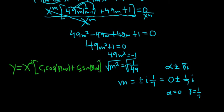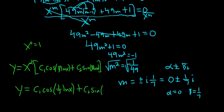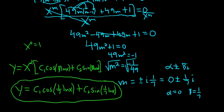So alpha is 0, so we get x to the 0, so that's 1. So this will be y equals c1 cosine. And then beta is 1 7th, so it's 1 7th ln x plus c2 sine, and then beta is 1 7th, so 1 7th ln x. And that would be the final answer.